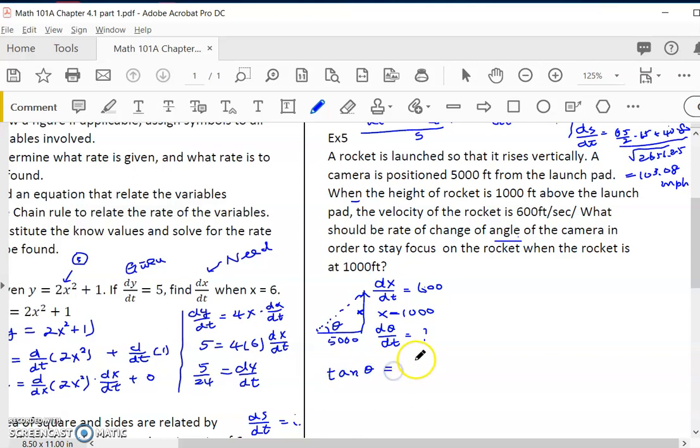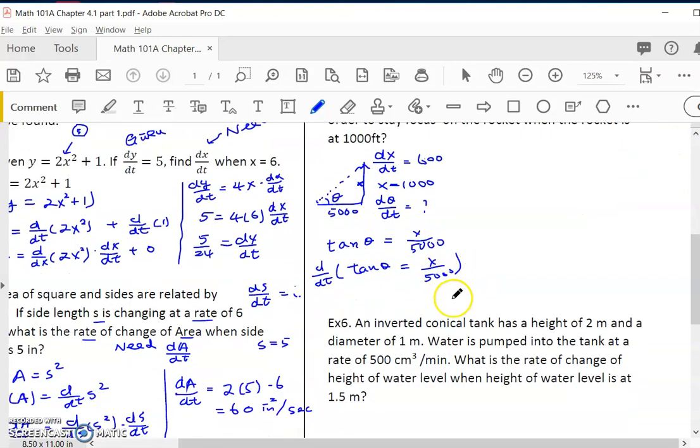From the question we have dx/dt at a certain point and we want at that time what is dθ/dt. x is actually moving, theta is also moving, so we need an initial equation that relates theta and x. Angle opposite over adjacent is tangent. We can write the equation that relates them: tan(θ) = x/5000. In order to do dθ/dt, I would do d/dt on both sides.